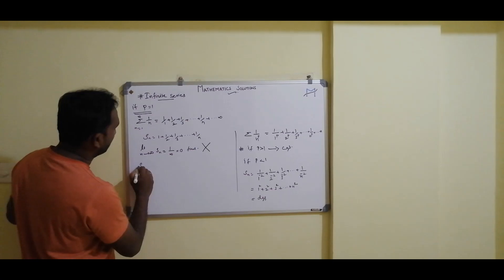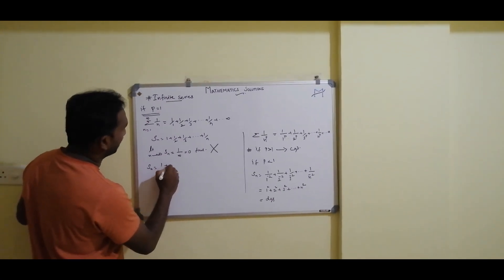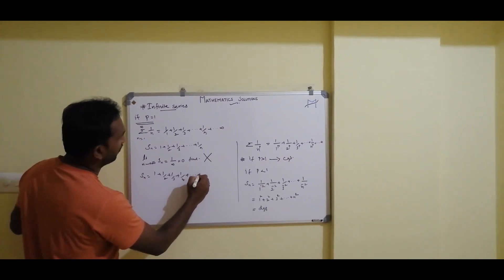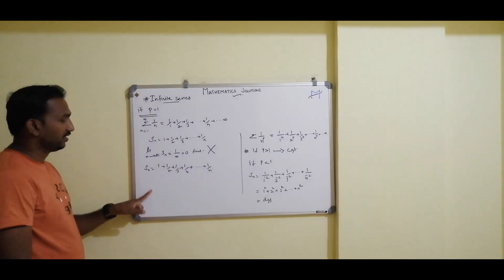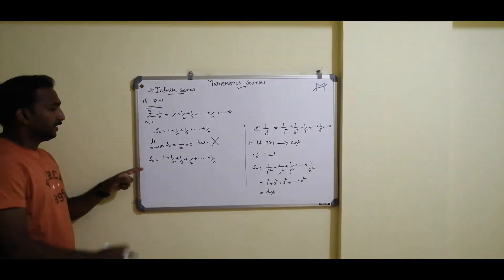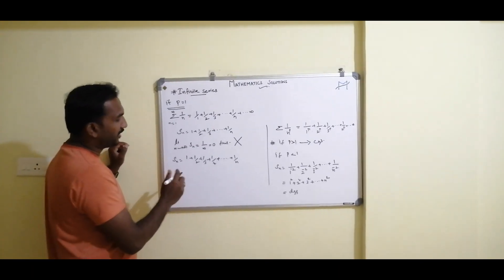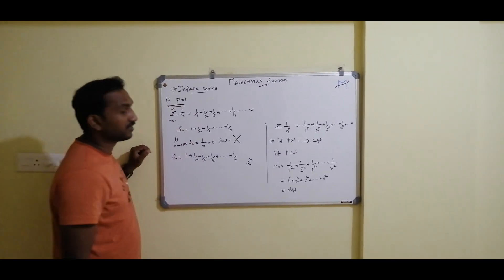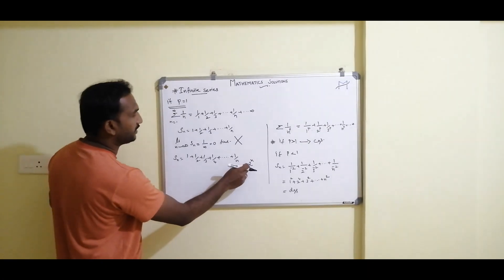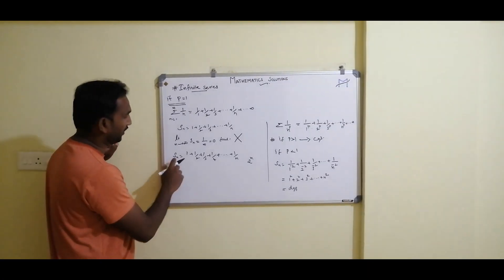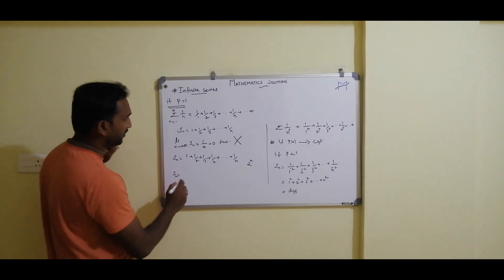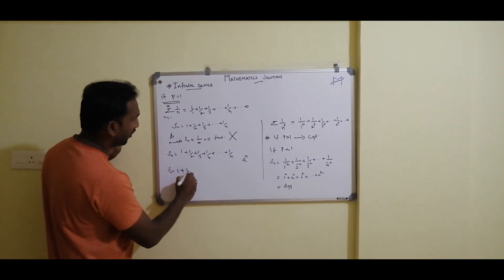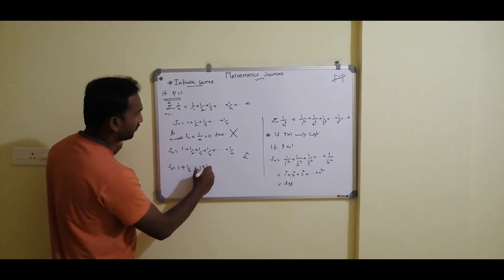We will prove that Sn = 1 + 1/2 + 1/3 + 1/4 + ... + 1/n, considering the series up to the Nth term. We add terms in groups of 2^N terms. For N = 1, we get S2 = 1 + 1/2.